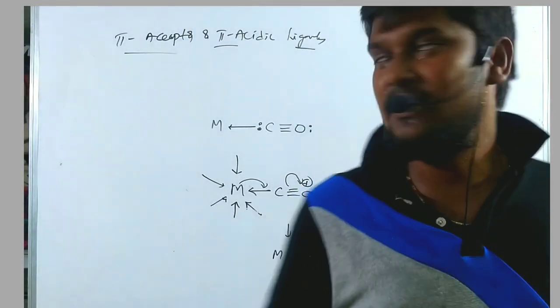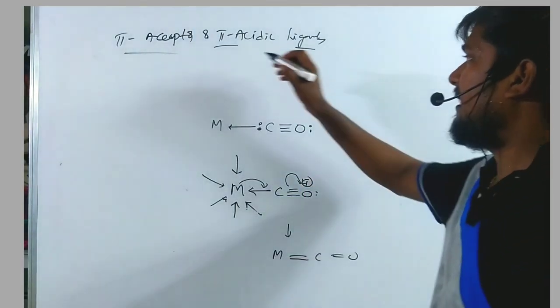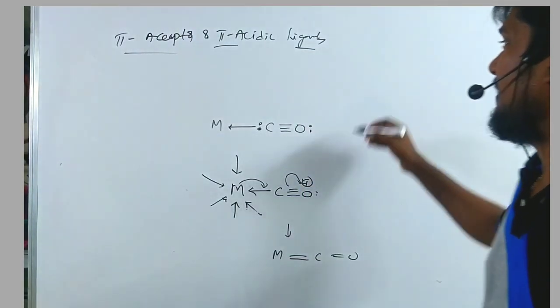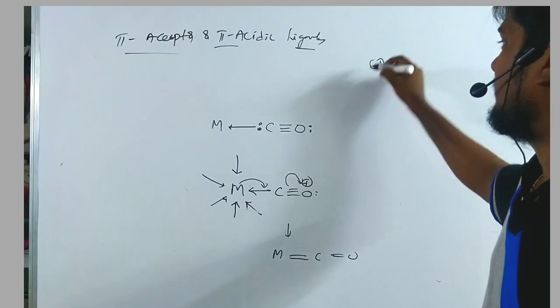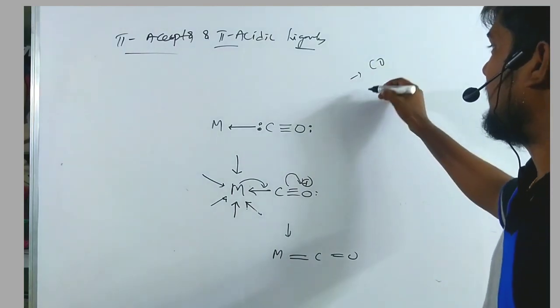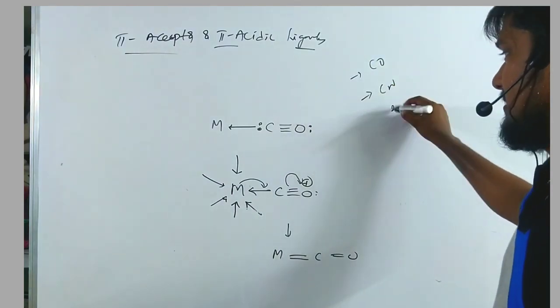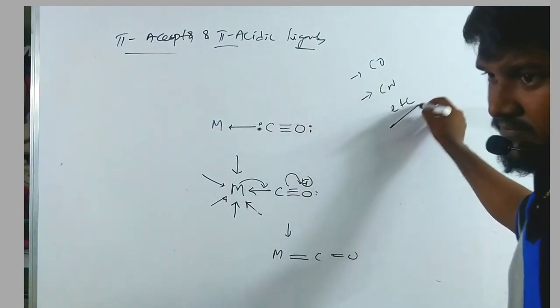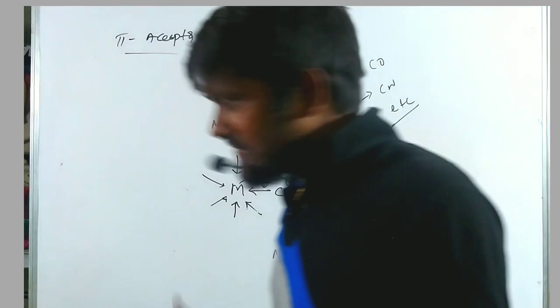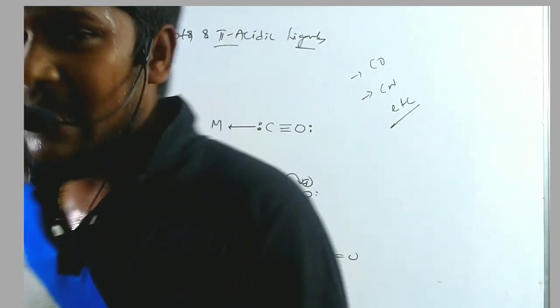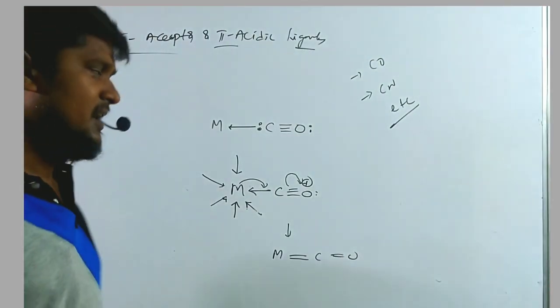Such ligands are known as pi-acceptor or pi-acidic ligands. The examples are CO, CN, etc. This is about pi-acceptor ligands.